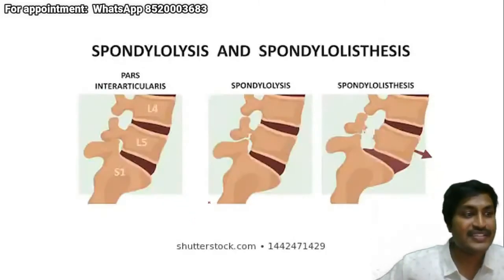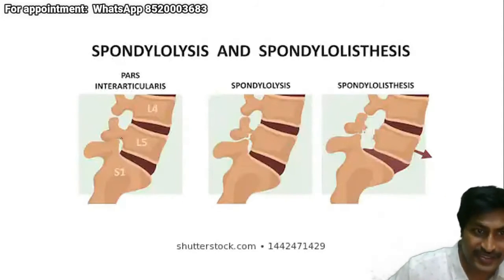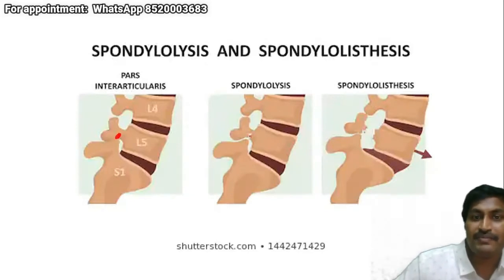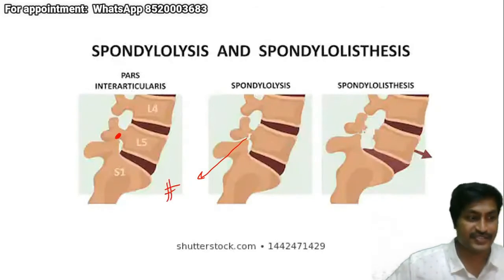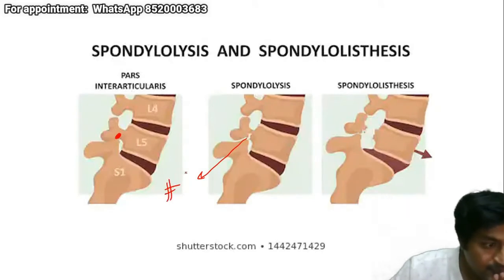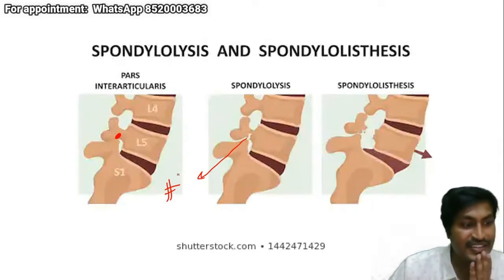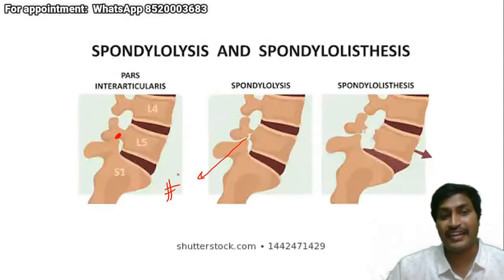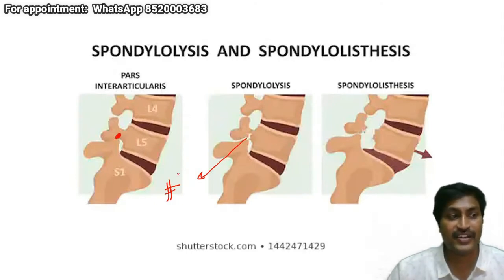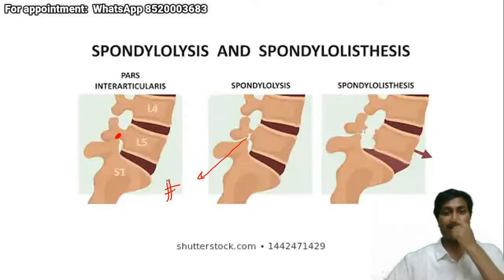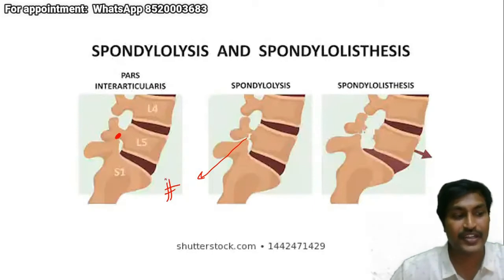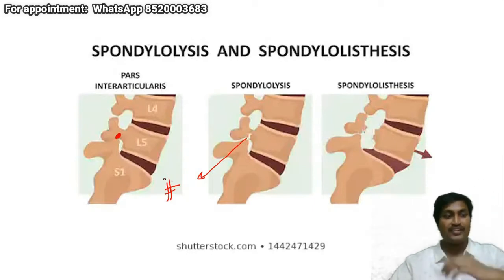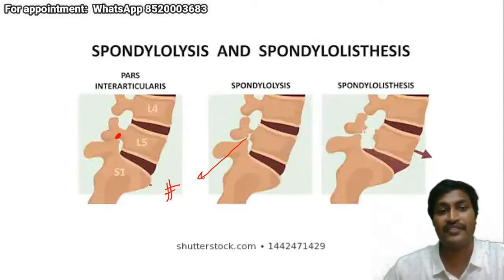I kept insisting you will have to identify the pars interarticularis. This one is the pars interarticularis — so what happened to the pars interarticularis here? There is a fracture of the pars interarticularis. Regarding disc desiccation — in early stages there is no decrease in height of intervertebral disc, but in late stages there is a decrease in height. When I speak about MRI pathology I will tell you about the intervertebral disc and all those pathologies. Now I am speaking about pathologies which you can identify on X-rays.